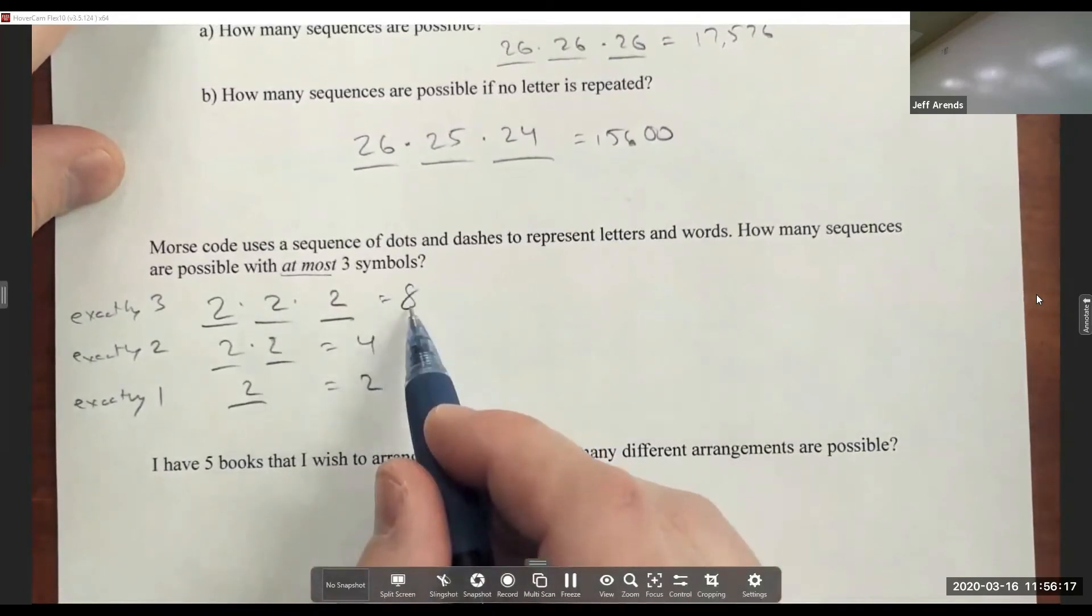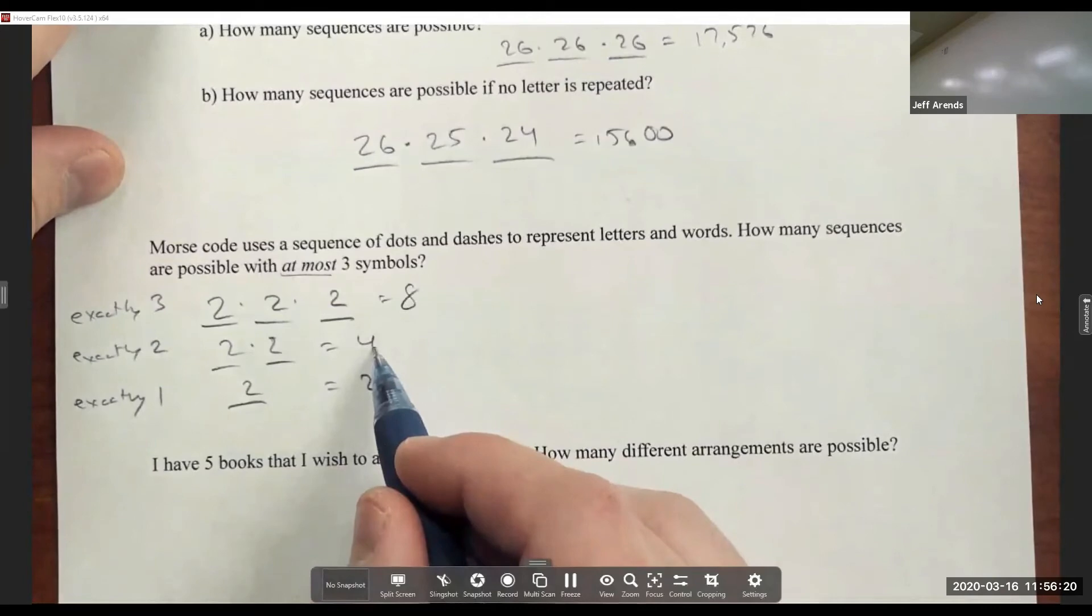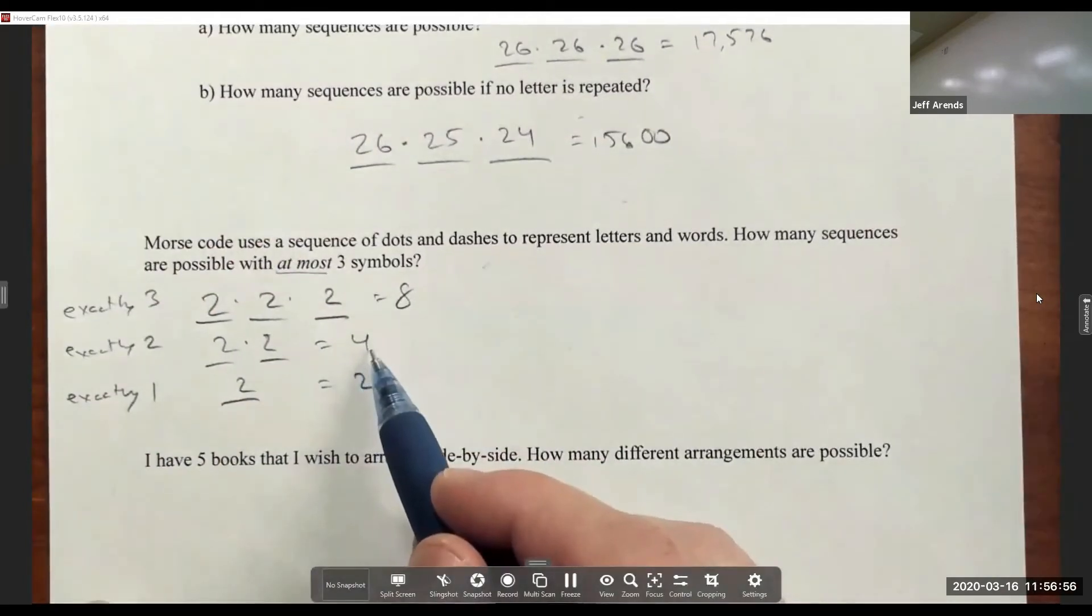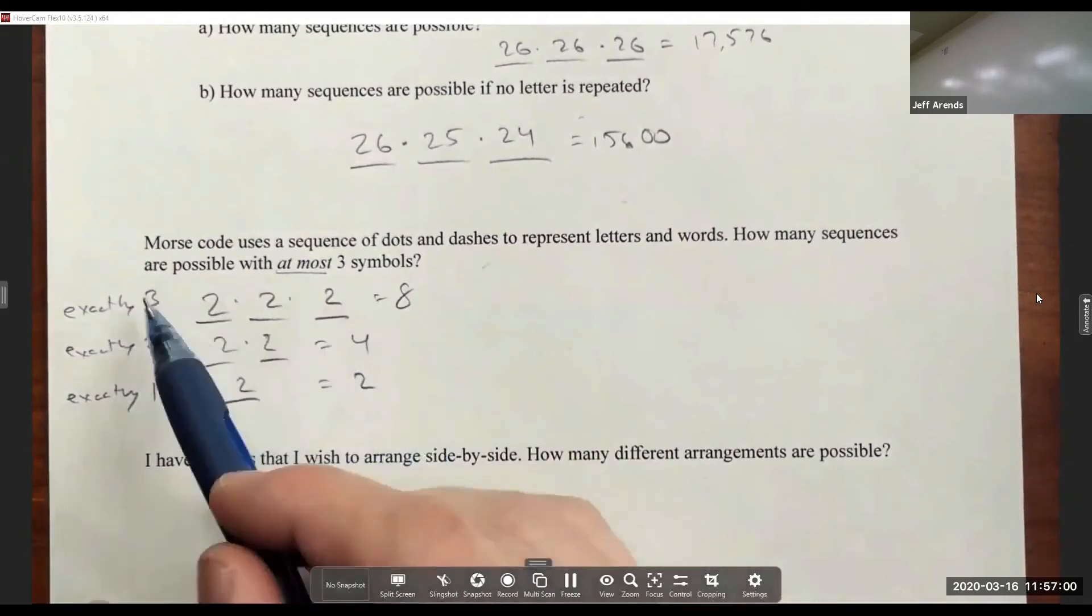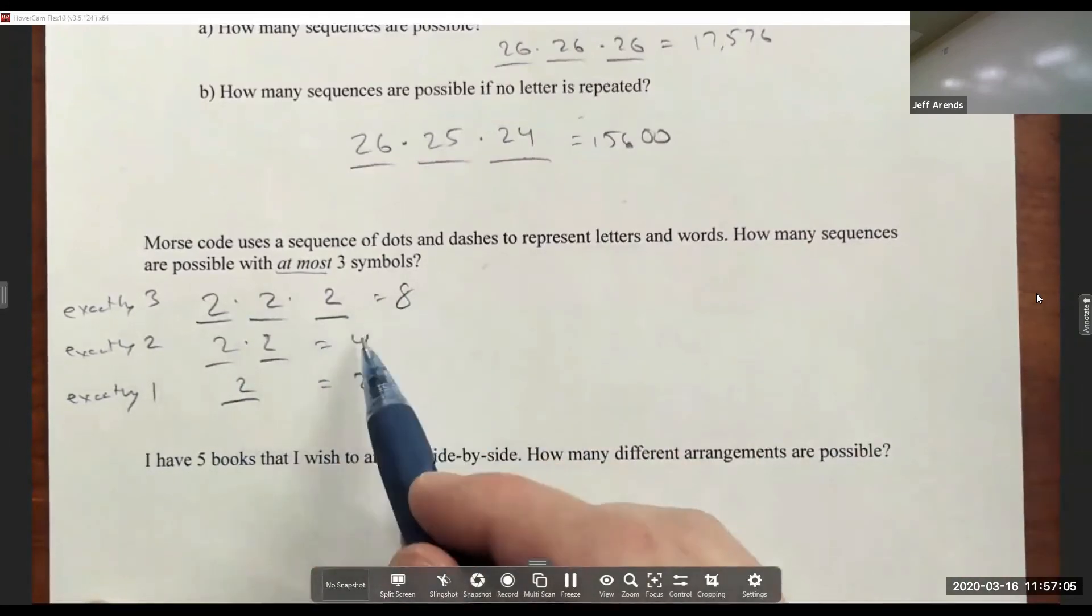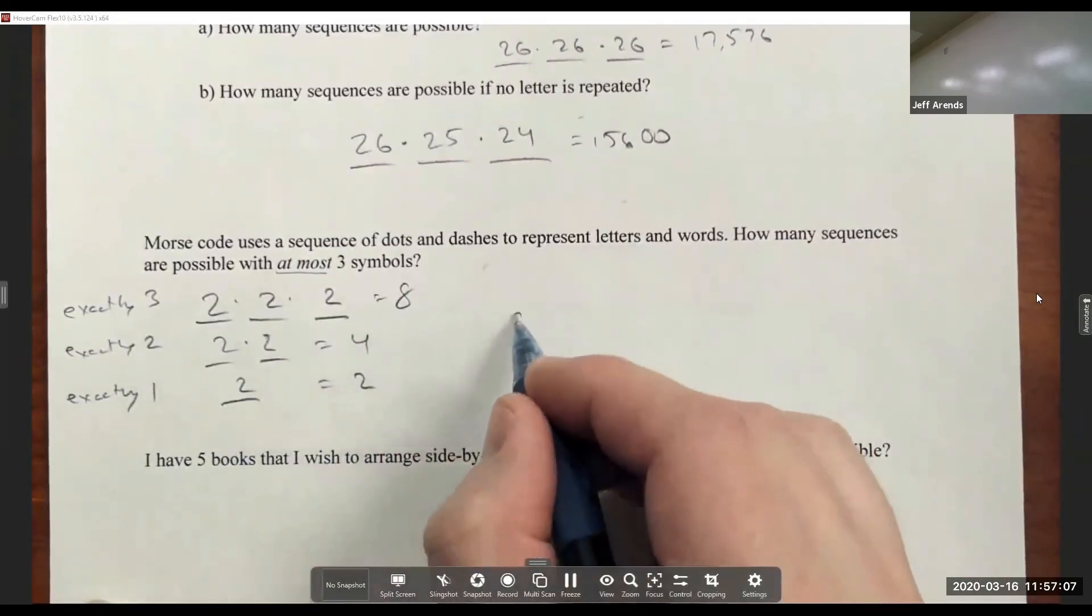There are eight different ways with exactly three, four with exactly two, and two with exactly one symbol. There's no way I'm going to be using exactly two symbols and simultaneously using exactly three symbols to represent a particular sequence. So I'm able to just add these numbers together.